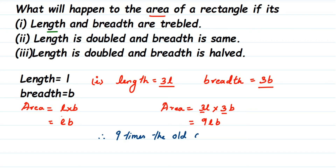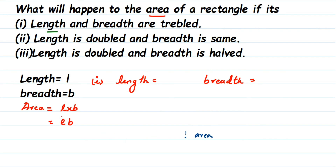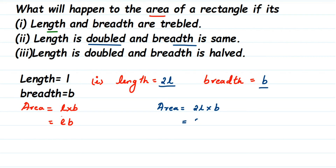The old area is the actual area we had. Now for the second condition: the length is doubled and the breadth remains the same. Double means 2 times more, so length becomes 2L and breadth stays B. The area will be 2L into B, which gives 2LB. Comparing: old area was LB, new area is 2LB — so the area is 2 times the old area.